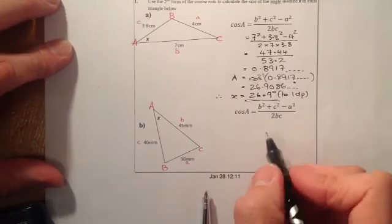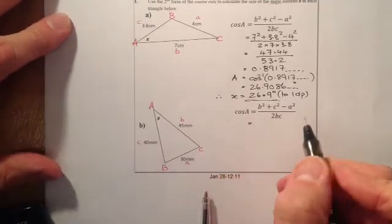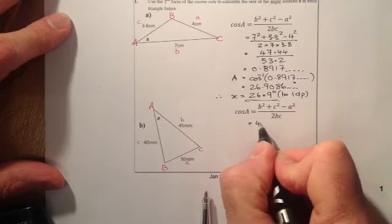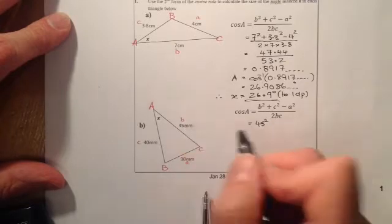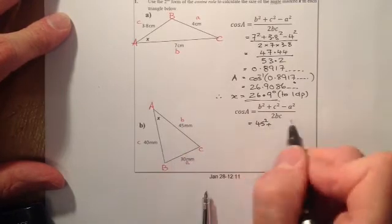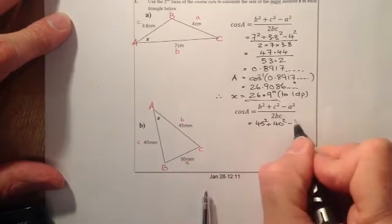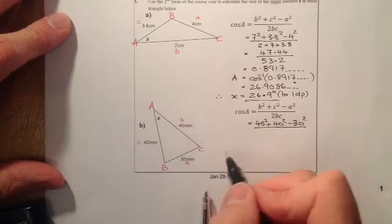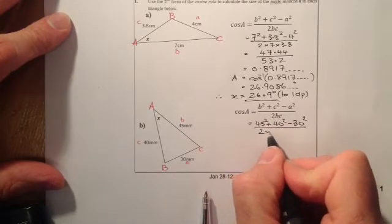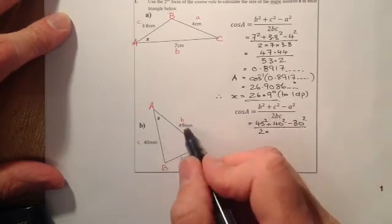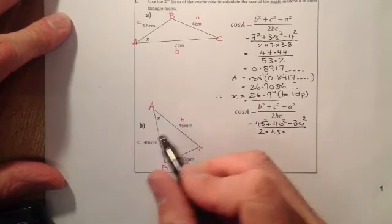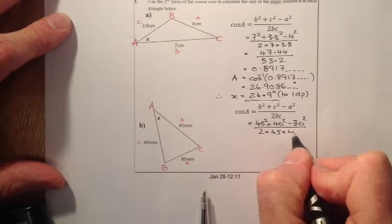Just substituting into the formula. On the top, I've got 45 squared for B, plus for C it's 40 squared, minus A which is 30 squared, all over. That's going to be 2 times the value for B, which is 45, and the value for C, which is 40.